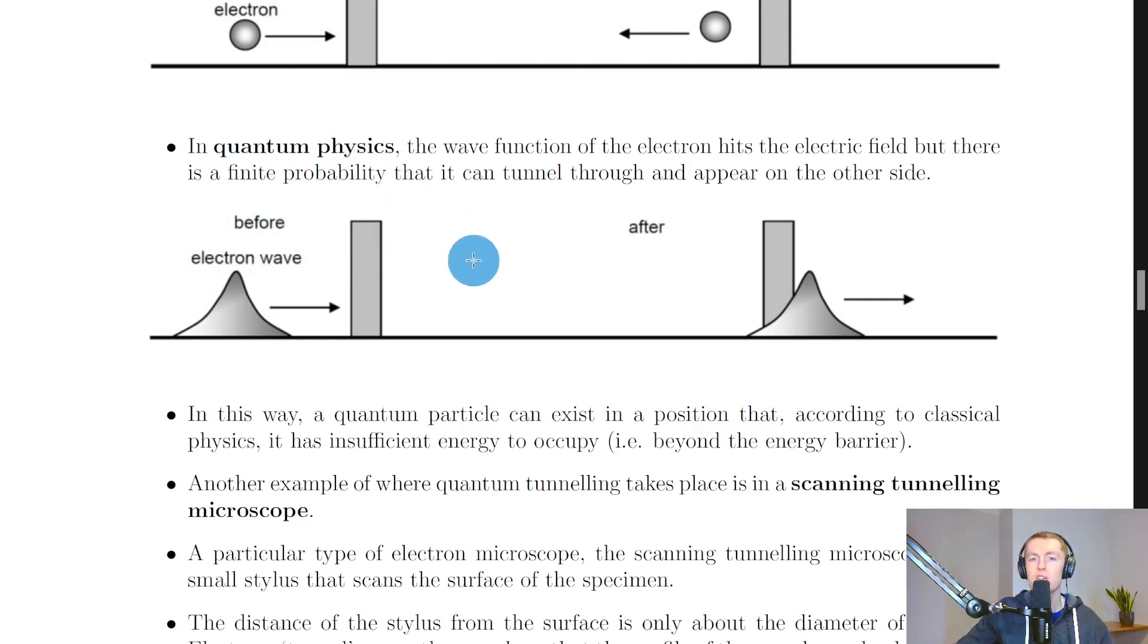In quantum physics however we can use probabilities rather than well-defined locations or positions of particles and therefore we can consider the electron to be a wave function instead of a particle. Here we have an electron wave function and it says the wave function of the electron hits the electric field but there is a finite probability that it can tunnel through and appear on the other side and you can see that happening over here.